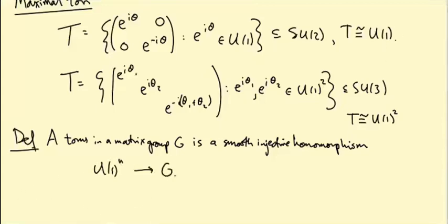Here we had U(1), here we had U(1) squared. More generally, we're going to have U(1)^n with n different thetas. I'm calling the injection a torus here. I could just say the image of this injection is a torus, but the point is it's a smoothly embedded torus inside the group.